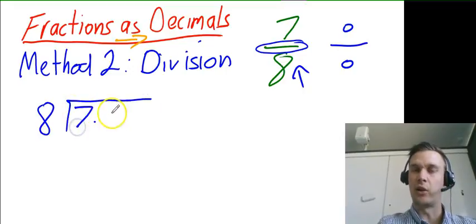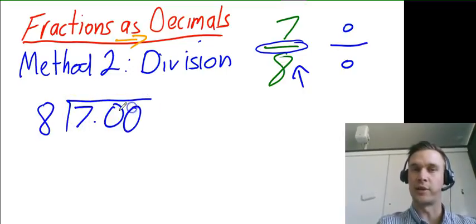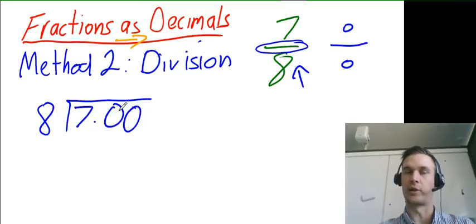We then have 7 and I like to put dot zero zero, or decimal zero zero, just so we're most likely going to be expanding this, and then you simply just do your division.